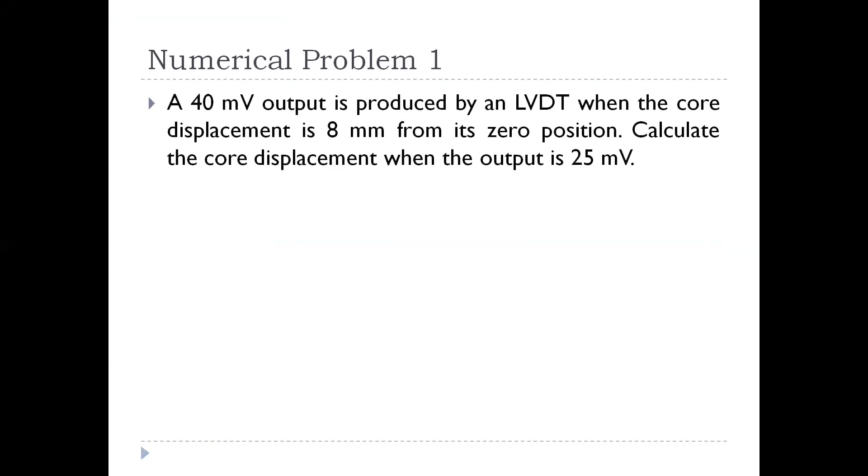A 40mV output is produced by an LVDT when the core displacement is 8mm from a zero position. Calculate the core displacement when the output is 25mV.